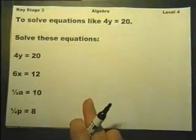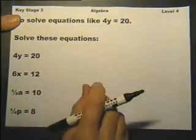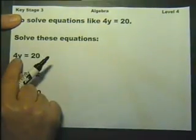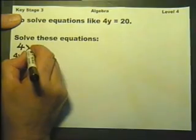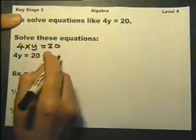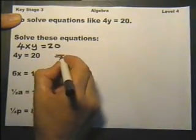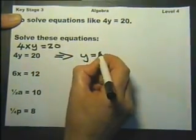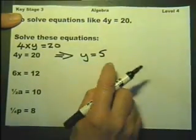Solving little equations. For example, solve these equations. 4y — as we learnt earlier, 4y means 4 multiplied by y. So 4 multiplied by a number is 20. We can work out that number must be 5, because 4 times 5 is 20. So y is 5.